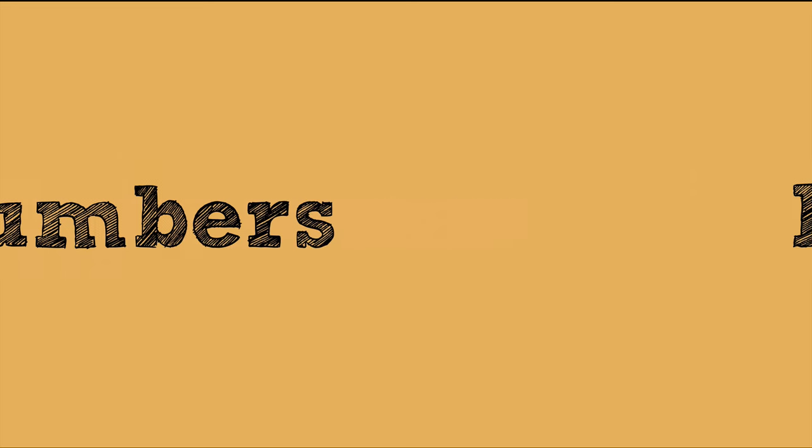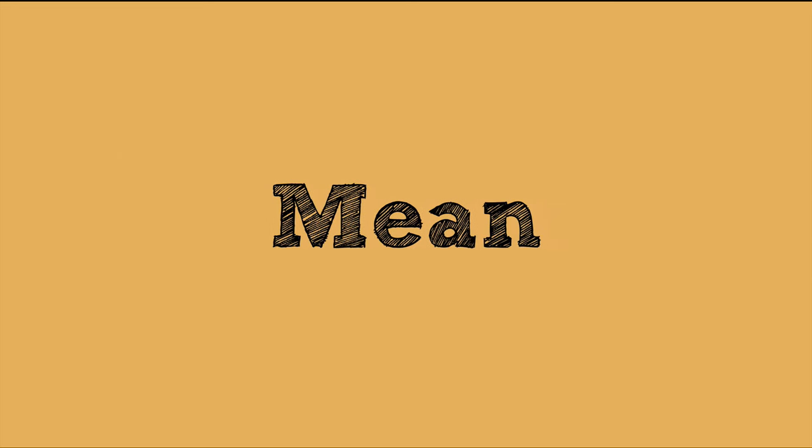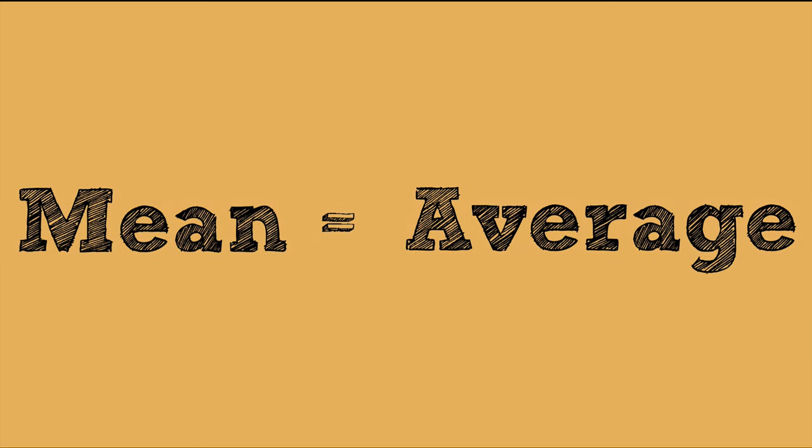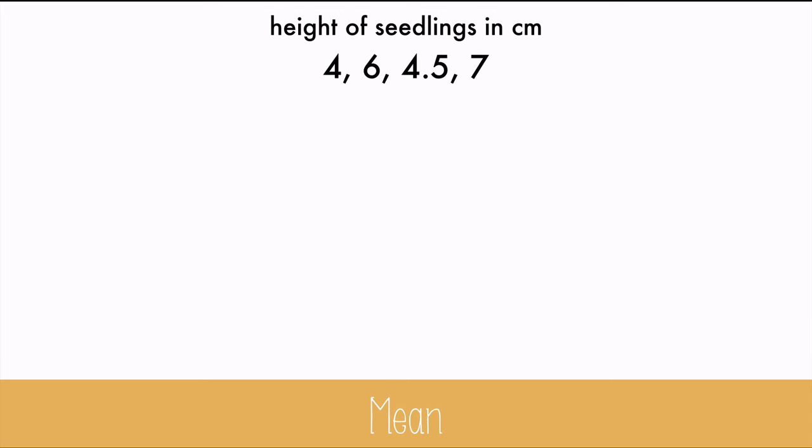One way to do that is to calculate the mean. Mean in math and science doesn't refer to the emotion. It's a calculation of the average. So let's calculate the mean for a set of data like this, which is the height of seedlings in centimeters. Again, the mean is just another way of saying the average.